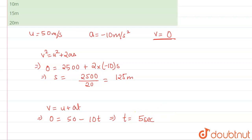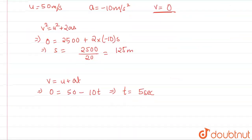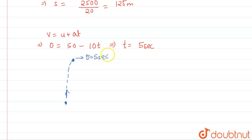We need to find the distance from 5 seconds to 6 seconds. The question becomes very easy now. In 5 seconds the object is going up and reaching the maximum height. So we take the maximum height point as our new reference. For this new motion, U equals 0, because the object starts from rest at the top.